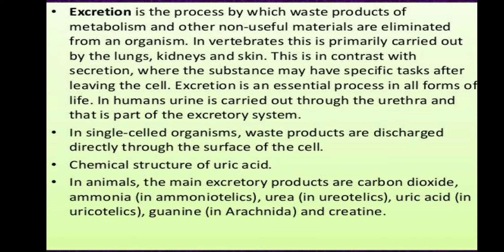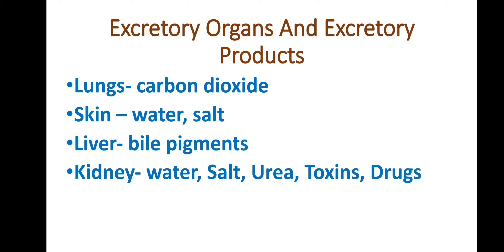Ammonia is readily soluble in water, so aquatic organisms excrete waste as ammonia — they are known as ammonotelic. Mammals, many terrestrial amphibians, and marine fishes mainly excrete urea, so they are known as ureotelic animals. Organisms that excrete nitrogenous waste as uric acid — such as reptiles, birds, land snails, and insects — excrete it in the form of pellets or paste.